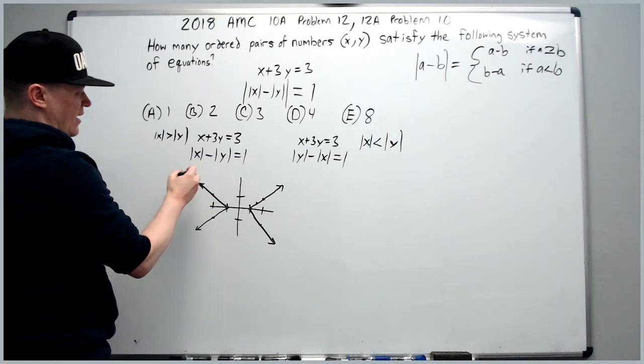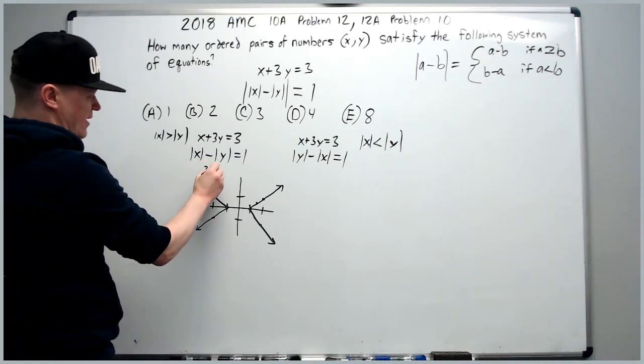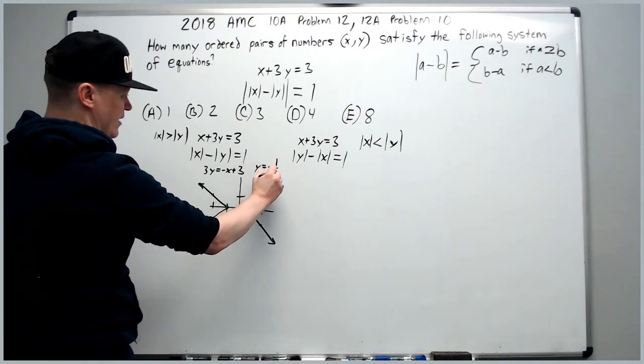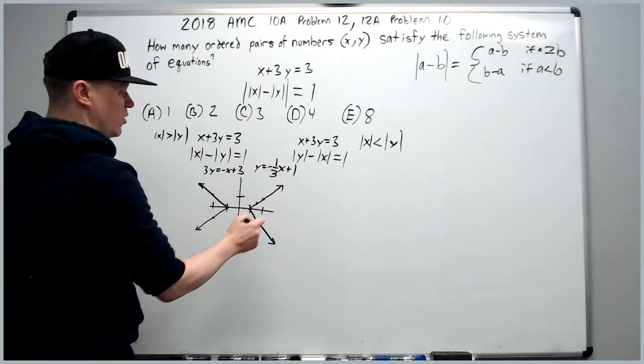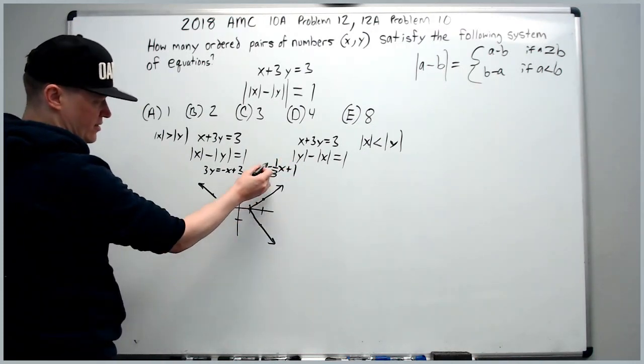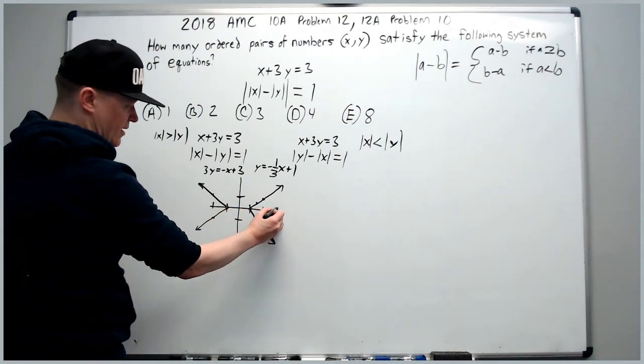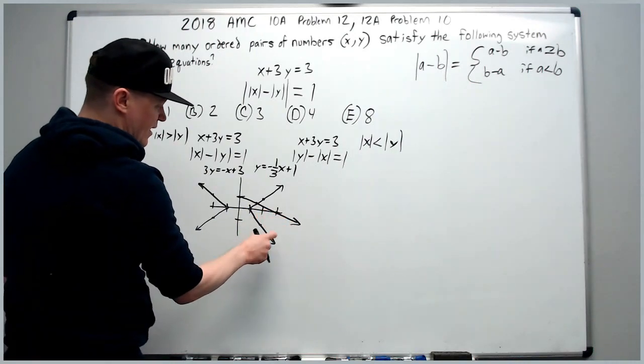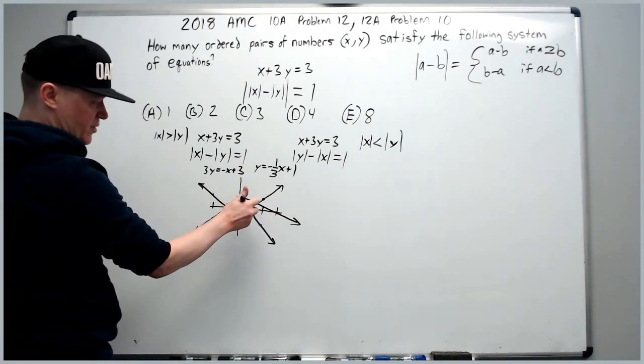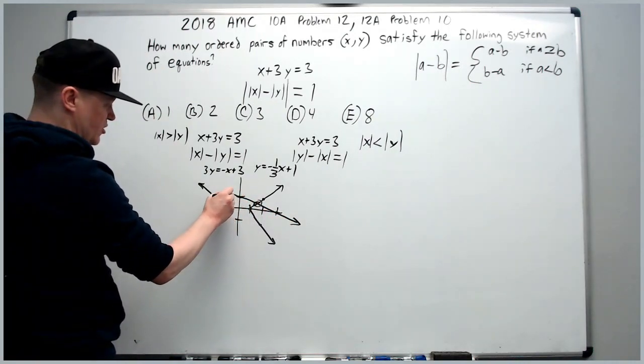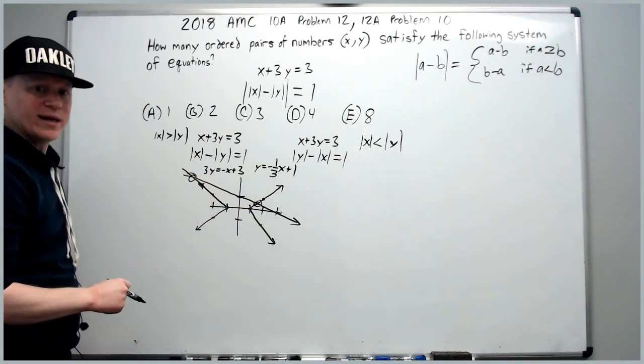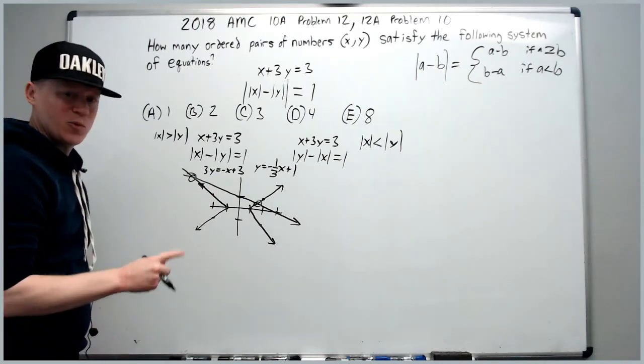Now we graph this. You're going to get 3y equals negative x plus 3. So y equals negative 1 third x plus 1. Go to 1, go down 1 and 3 to the right. And you're going to be right here. It's going to pass through like this.